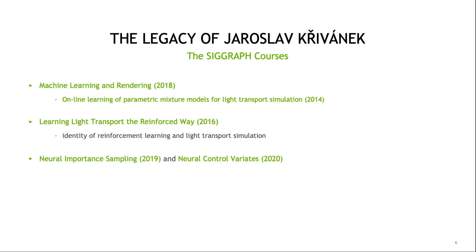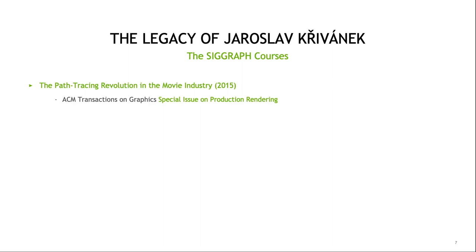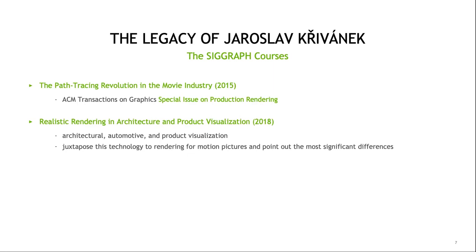Neural networks can even replace the classic data structures to approximate radiance, which in turn enabled neural control variates in light transport simulation. As mentioned before, the path tracing revolution changed the movie industry, and following the 2015 SIGGRAPH course, production rendering companies described their technologies in depth in a seminal special issue of ACM Transactions on Graphics.